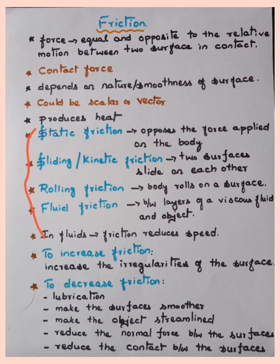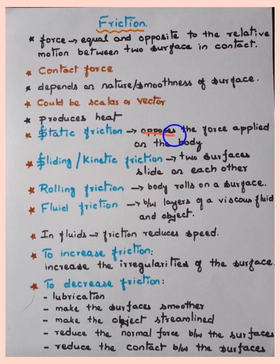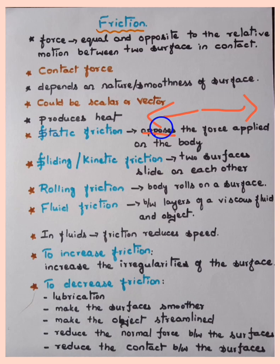There are mainly four types of friction: static friction, sliding or kinetic friction, rolling friction, and fluid friction. Static friction occurs when the object is in a state of rest. Static friction opposes the force applied on the body — if this is the direction of the force applied, static friction acts in the opposite direction. So you can remember: static friction involves an object at rest.